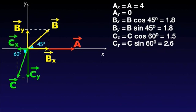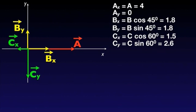Now that we've calculated the components of all three vectors, we can remove the original vectors from our diagram. As you can see, all component vectors are either along OX or OY.